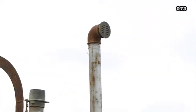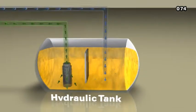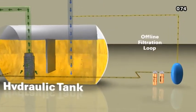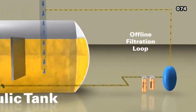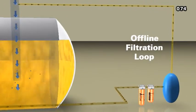Inadequate breather efficiency also allows dirt to ingress the holding tank. There are situations where offline filtration can be used to supplement existing filtration to achieve target ISO cleanliness levels.